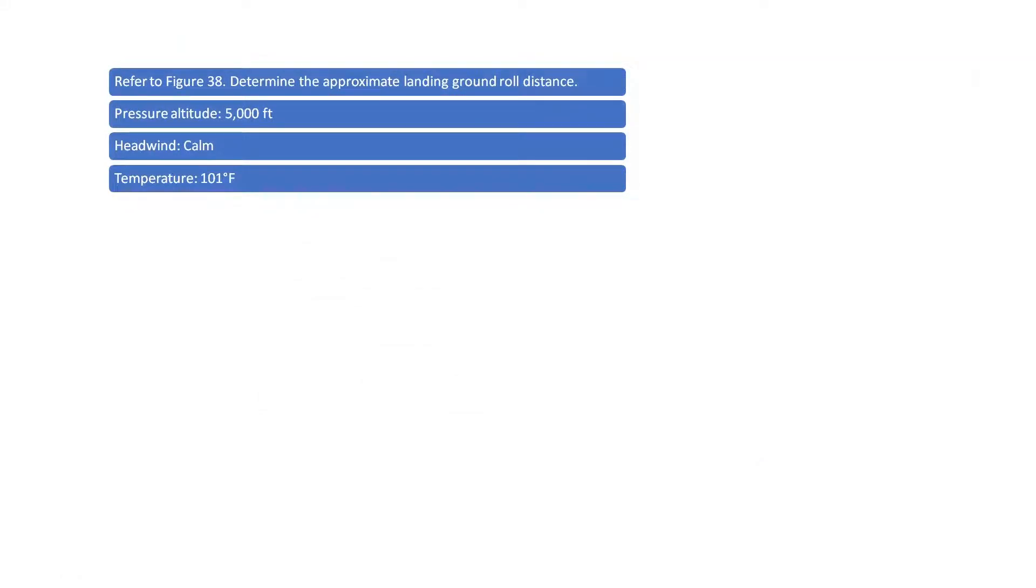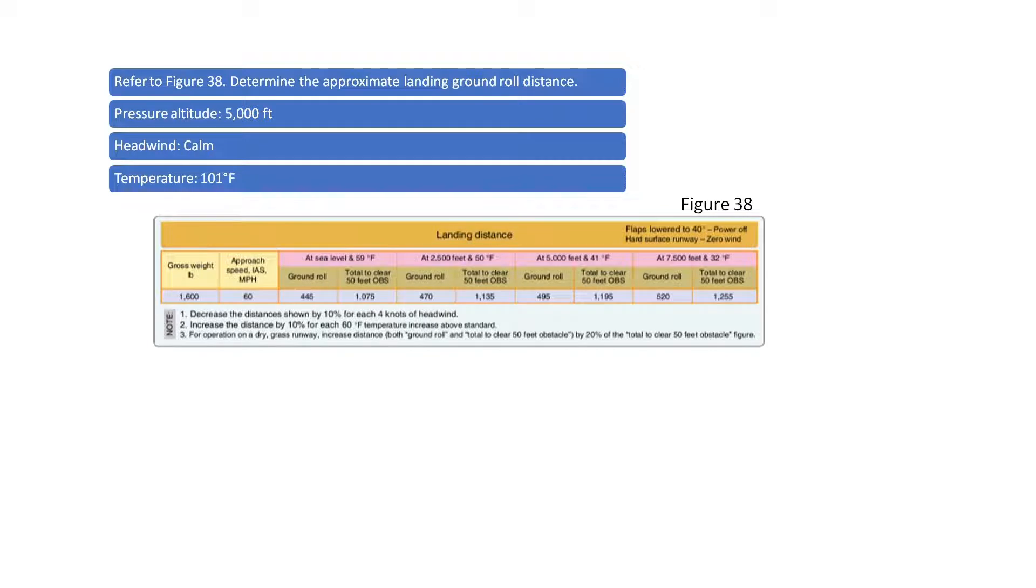Refer to Figure 38. Determine the Approximate Landing Ground Roll Distance. As illustrated, the pressure altitude is 5,000 feet. The headwind is calm and the outside air temperature is 101 degrees. Refer to the area of the chart denoting the ground roll distance when pressure altitude is 5,000 feet. Since the outside air temperature of 101 degrees is well above the indicated temperature of 41 degrees, we need to make an adjustment to the ground roll distance to account for the increased air temperature.